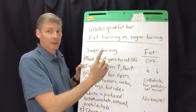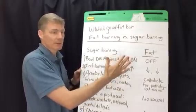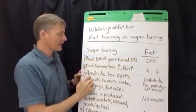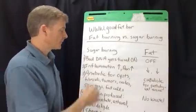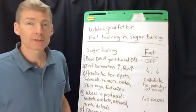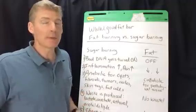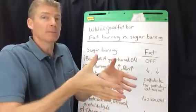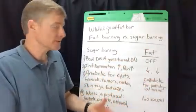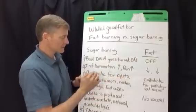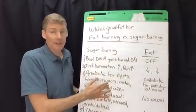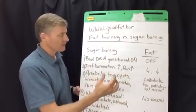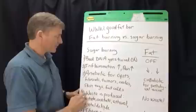The second bad thing about sugar burning is that inflammation goes up, and therefore pain goes up. Number three: burning sugar is anabolic, meaning it builds various pathological conditions. The word anabolic in ancient Greek means mound-building — literally like digging your hands into dirt and throwing up mud to create a mound. So sugar burning is anabolic for cysts, fibroids, tumors, cancer tumors, moles, skin tags, and fat cells.